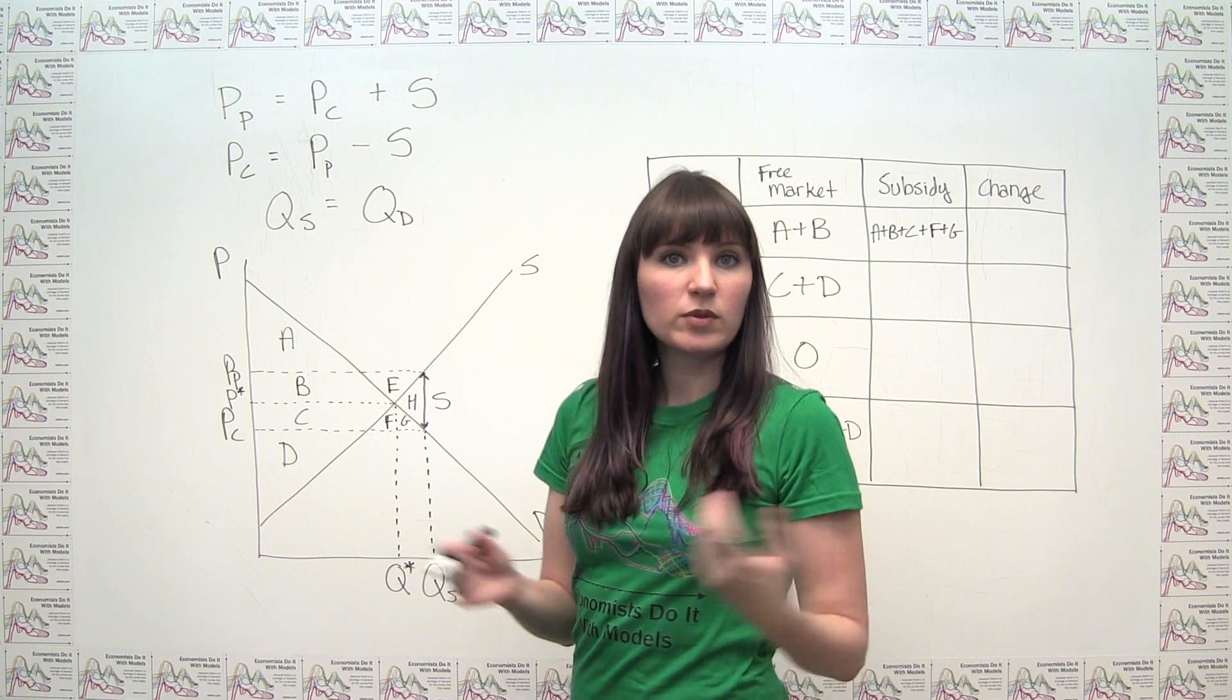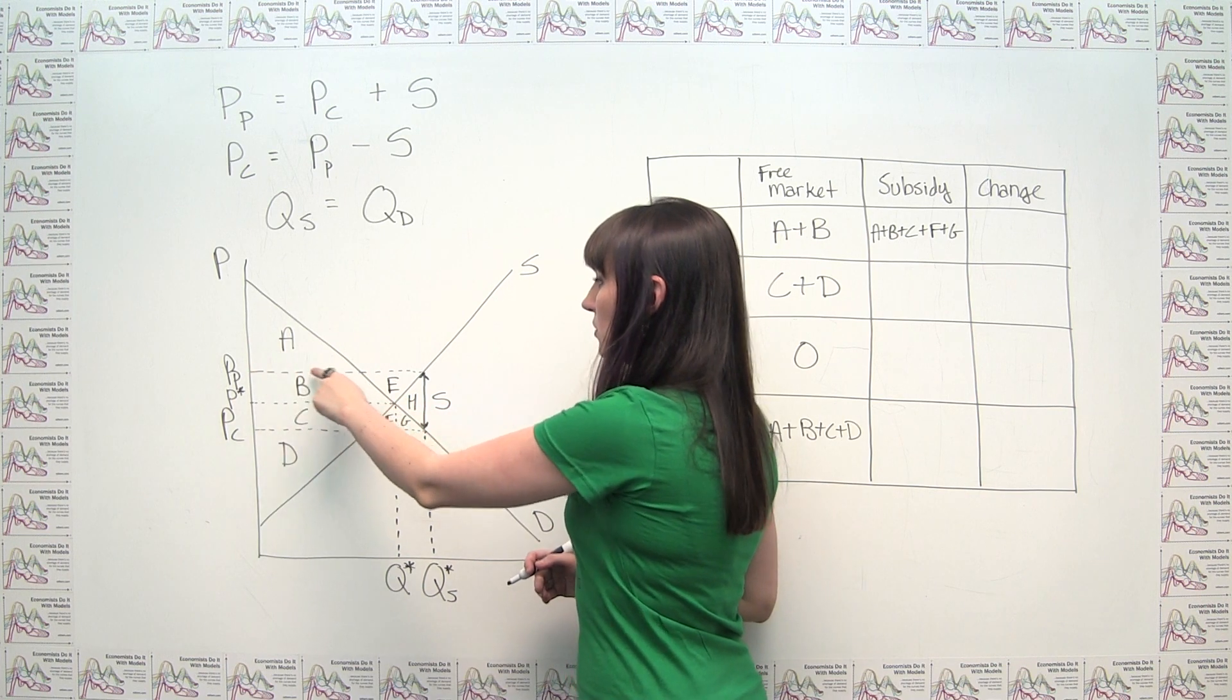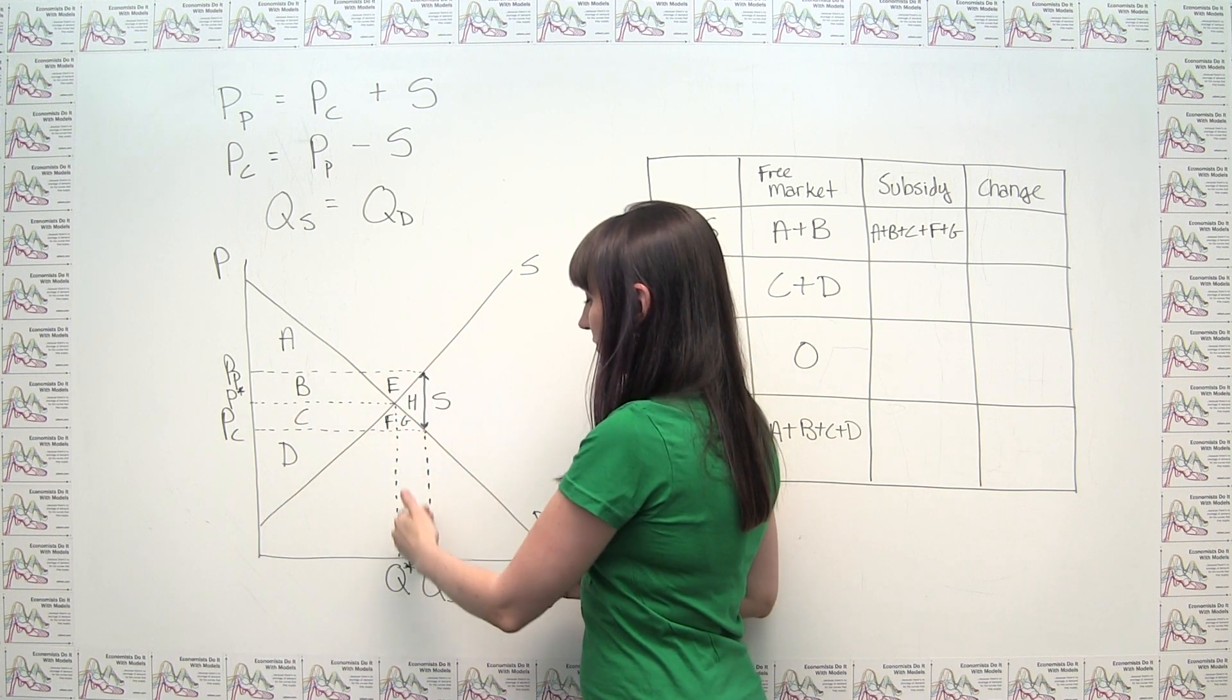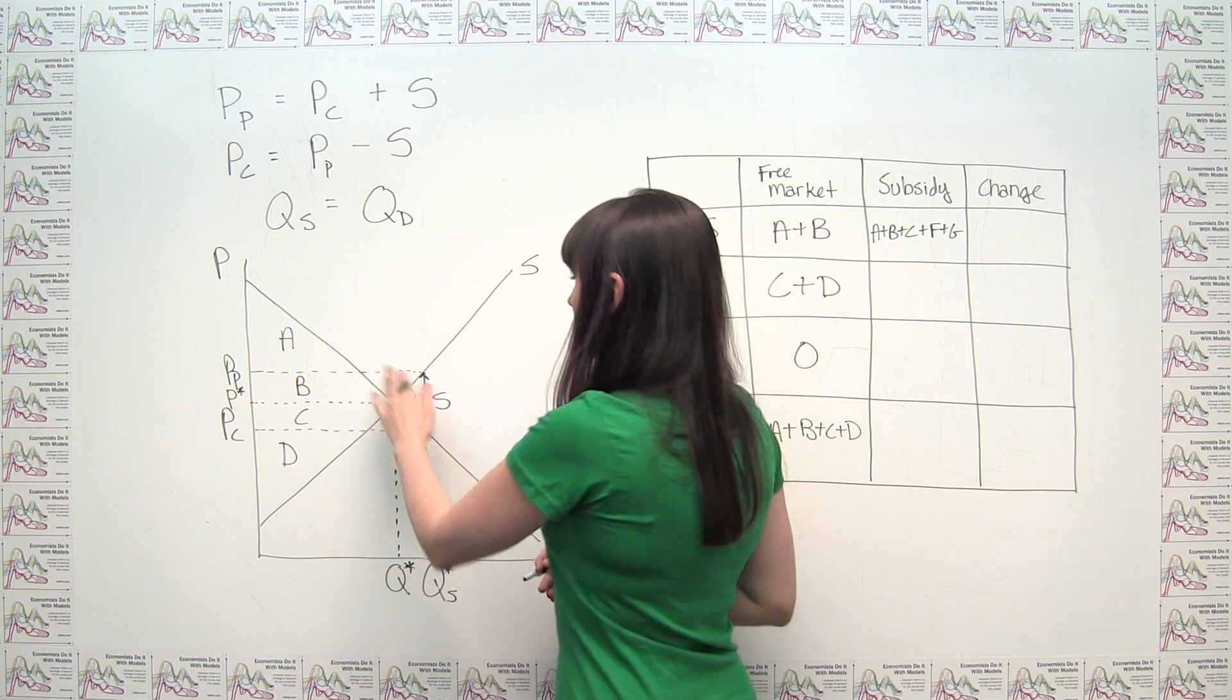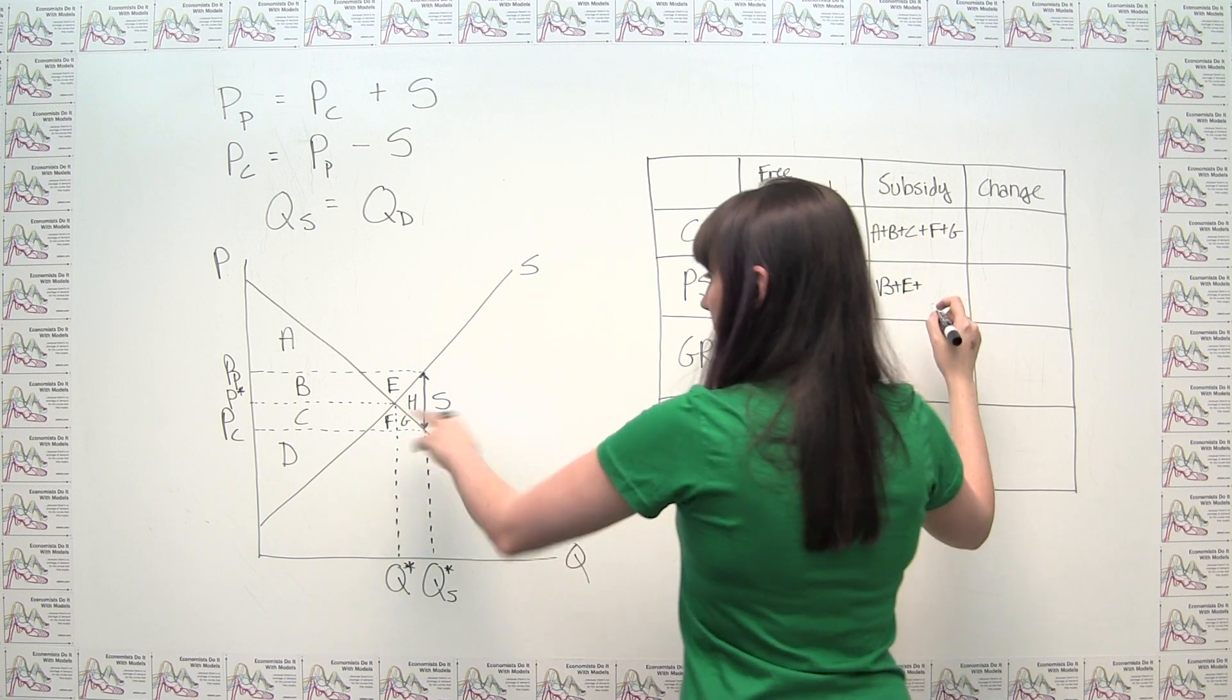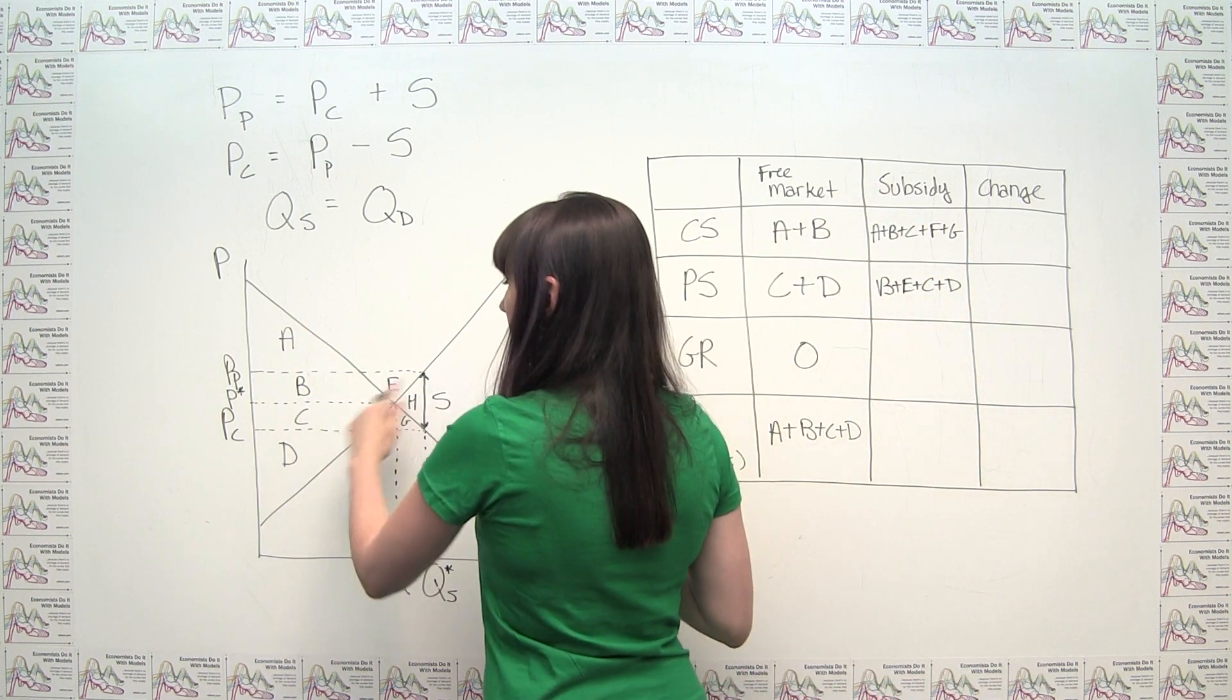Similarly, we can apply our rules for producer surplus. And we can say that producer surplus is everything below the price that the producer gets, which is now up here, above the supply curve, to the left of the quantity that's being transacted, which is now out here. So we see producers getting B plus E plus C plus D. That gives us this triangle here.